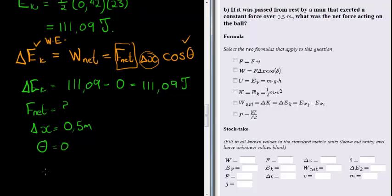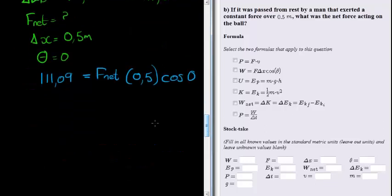So substituting all of this in there, we get 111.09 is equal to the net force times the change in displacement, which is 0.5 cos of 0. Which means if we solve the net force, we just divide both sides, cos of 0 is just 1, with 0.5, on both sides.